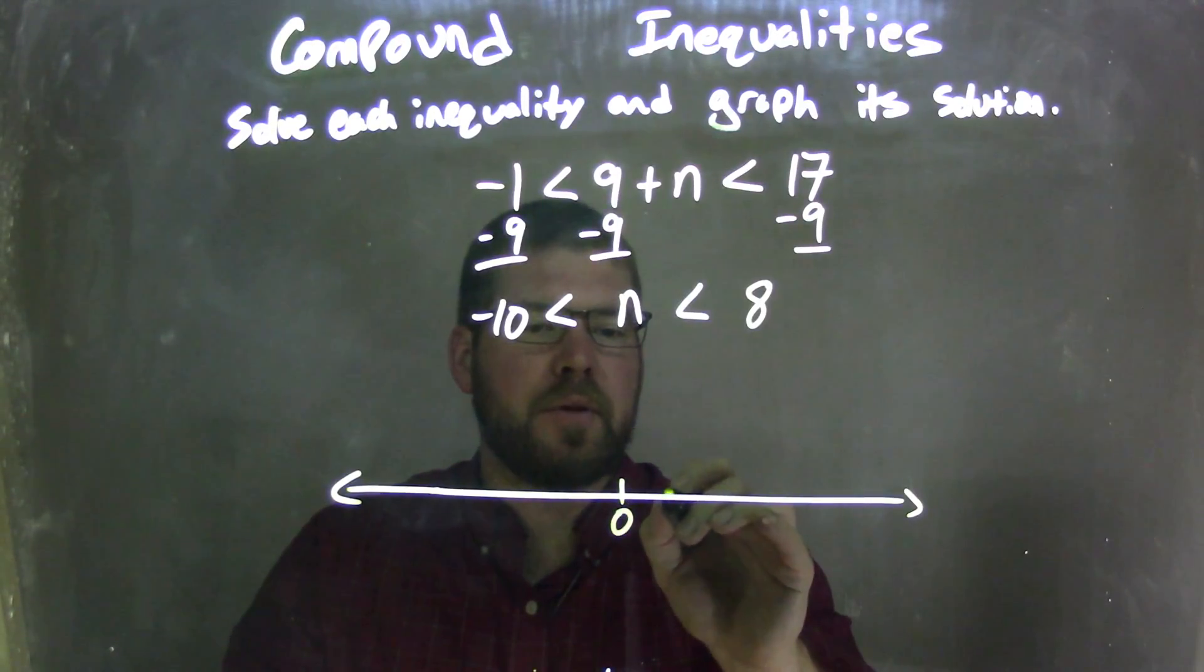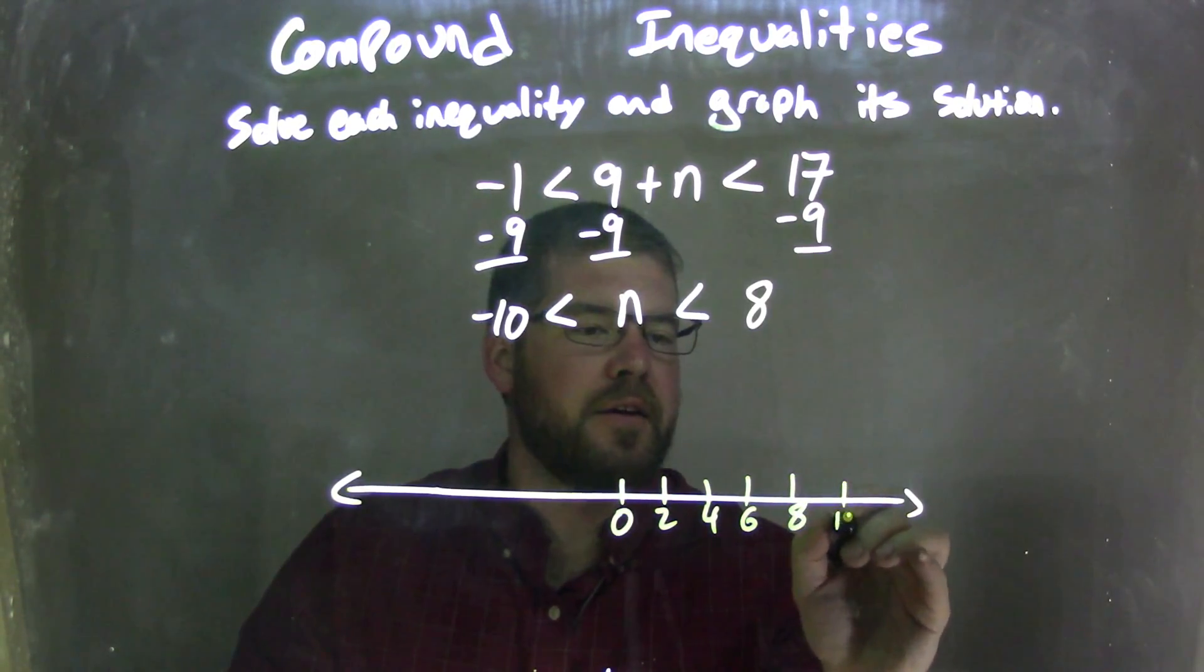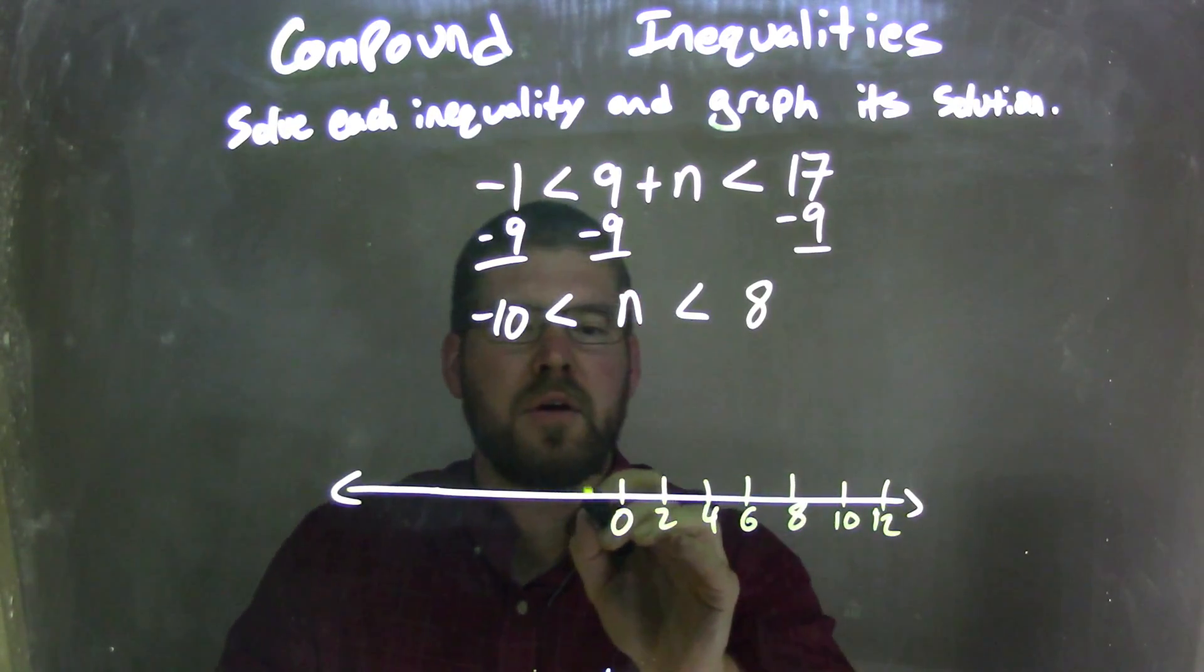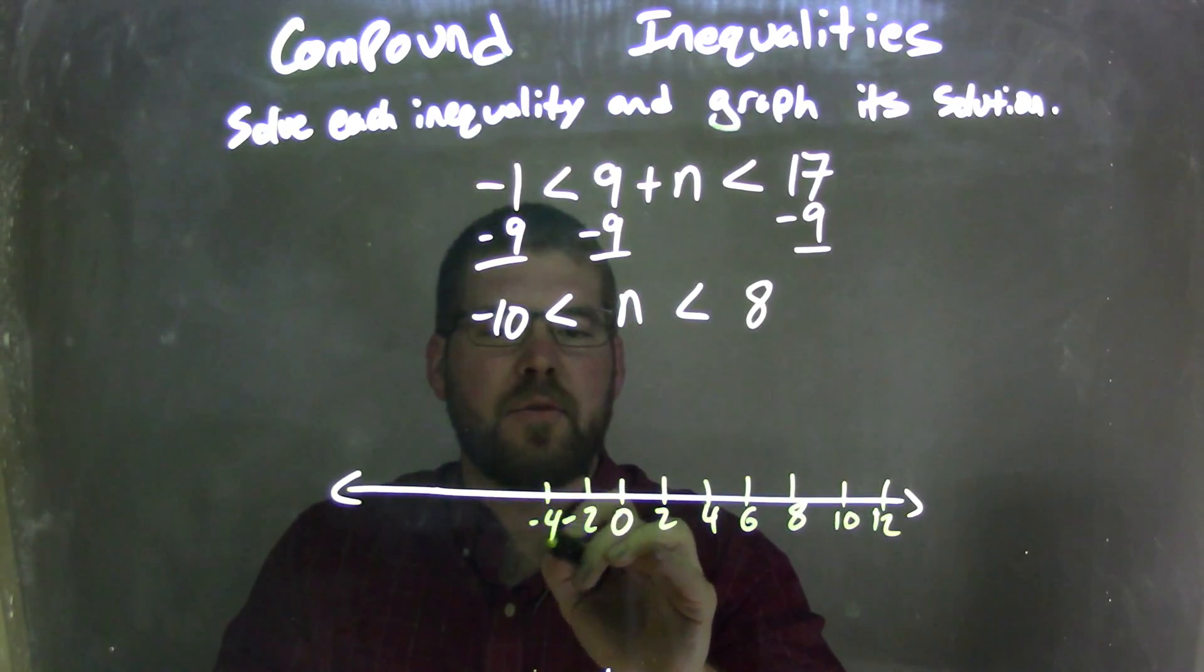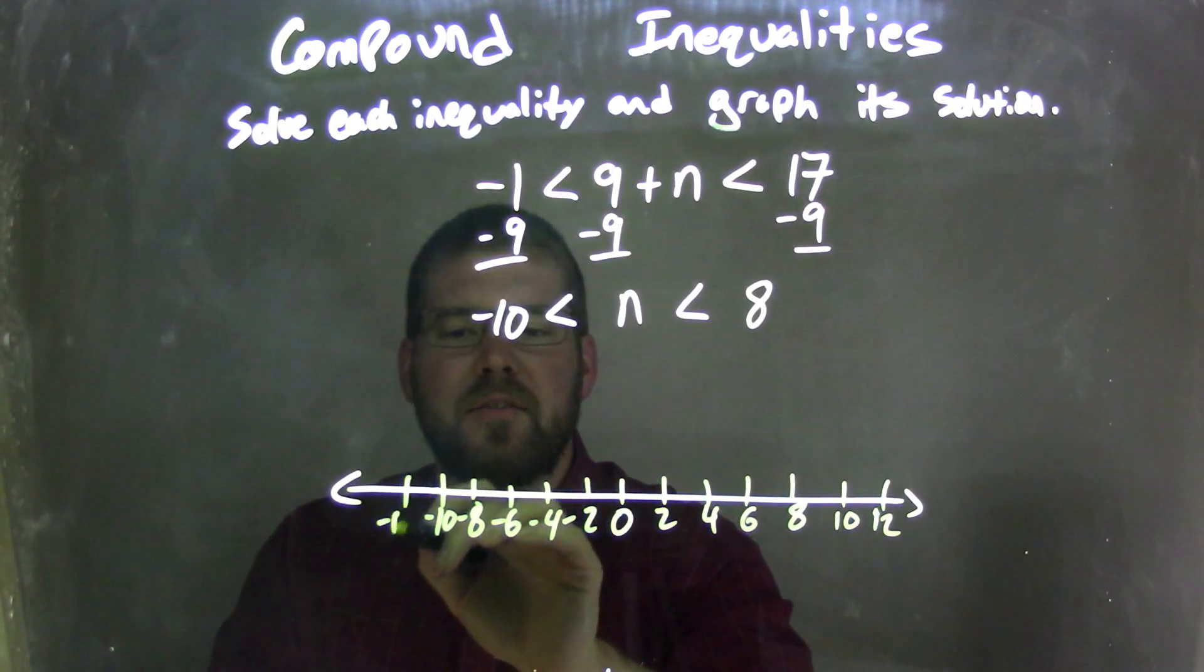So let's go 0 here, let's go with 2's: 2, 4, 6, 8, 10, 12. Negative 2, negative 4, negative 6, negative 8, negative 10, negative 12.